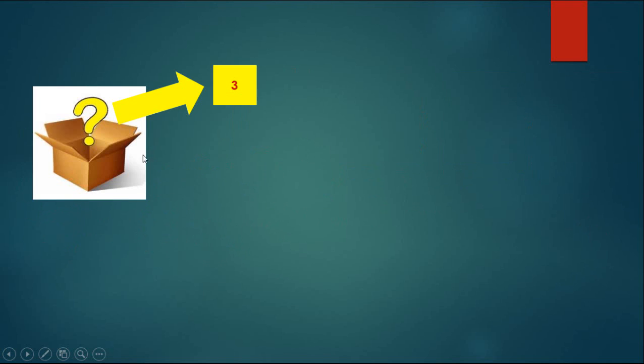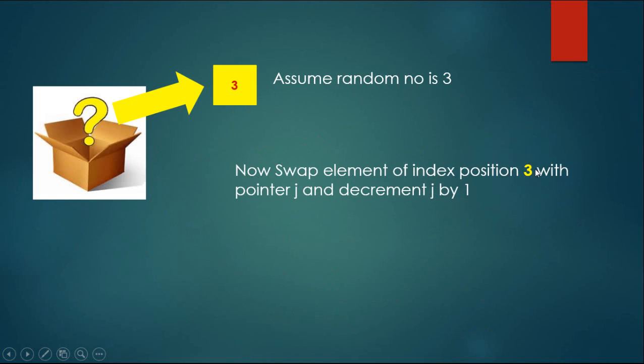Pass 0. Assume random number is 3. Now swap element of index position 3 with pointer j and decrement j by 1.